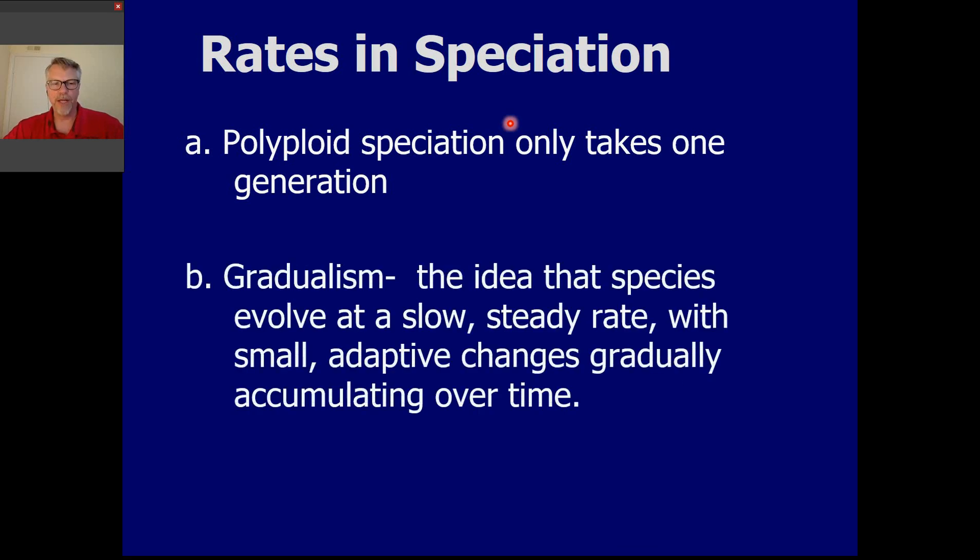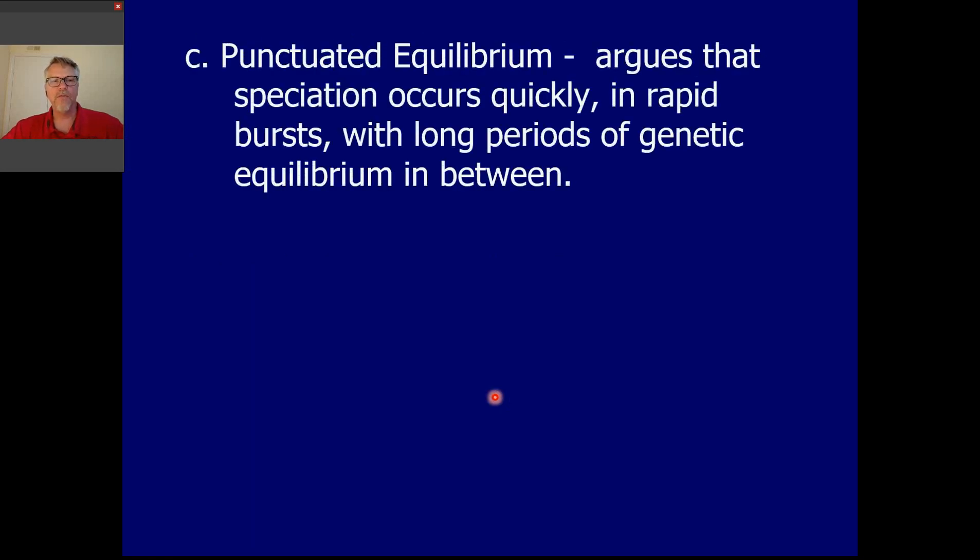But more generally, and applying to animals and plants as well, there are a couple of ideas. One of these ideas is called gradualism. And this is the idea that species evolve slowly, gradually, steadily, over long periods of time, by way of small adaptive changes that accumulate. Alright, so gradualism, gradually, the species will change and evolve slowly and steadily.